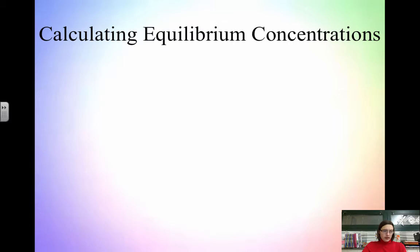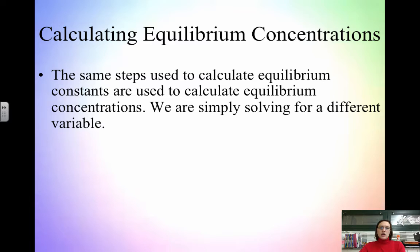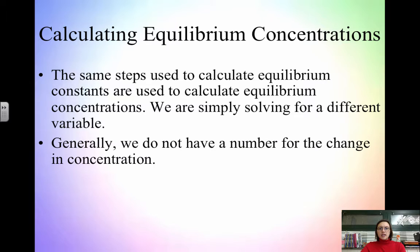Now we're going to calculate equilibrium concentrations. In the previous video, we calculated an equilibrium constant when given equilibrium concentrations, or used an ICE table when given one equilibrium concentration. Now we'll calculate equilibrium concentrations from initial concentrations and the equilibrium constant. The same ICE table steps are used — we're simply solving for something different. Since we don't have a number for the change in concentration, that becomes x, so we do algebra to solve for x.